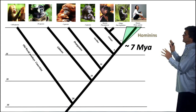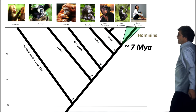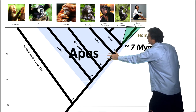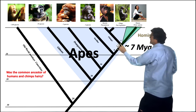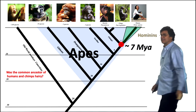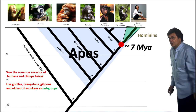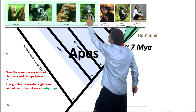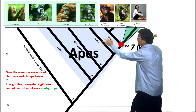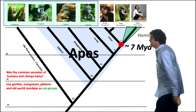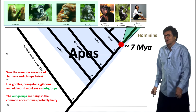Here we have a human being, the two types of chimps, the hominins, and the apes. Humans are a type of ape. What was the common ancestor of humans and chimpanzees? Was that common ancestor hairy? Humans are not very hairy, chimps are hairy — we don't know. You can use gorillas, orangutans, gibbons, and old world monkeys as outgroups. They're all hairy, so the common ancestor was probably hairy.